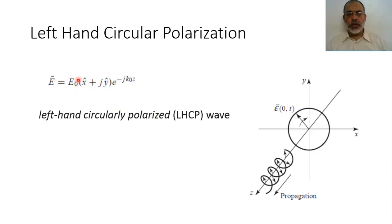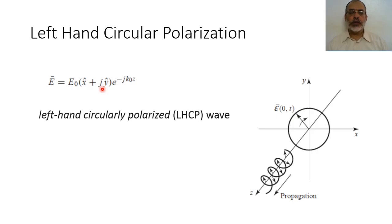If the amplitude of the X component does not exactly equal the amplitude of the Y component, the polarization will not be completely circular — it would be elliptical polarization. Similarly, if the phase angle between the X and Y components is not exactly π/2 or minus π/2, it will also be elliptical polarization. If the phase angle between the X and Y components is zero, it would be linear polarization. These are the different cases for the polarization of a plane wave.